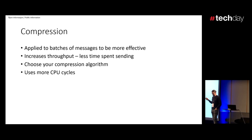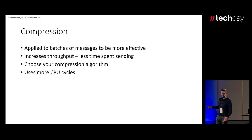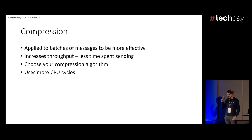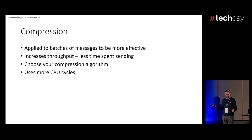There's nothing wrong with compression itself. It's used to make your messages smaller on the wire when you're sending them over. Usually that helps with throughput because you're sending more megabytes or gigabytes in the unit of time. There are multiple compression algorithms you can use, and there's always a trade-off between how much CPU it uses versus how much compression it gives you. Compression is usually recommended, especially if you're using text-based messages like JSON or XML.